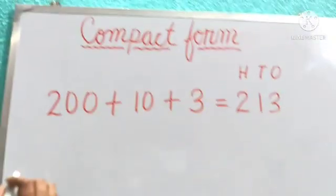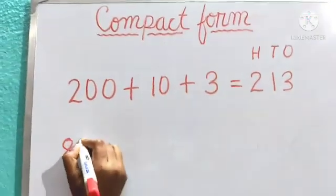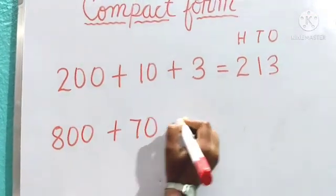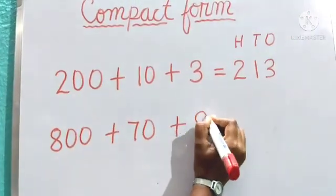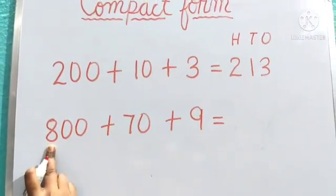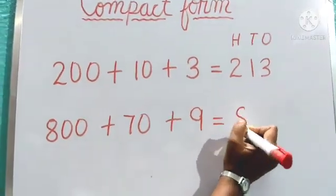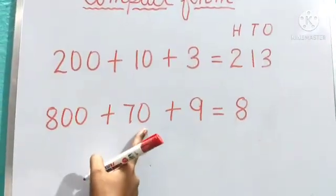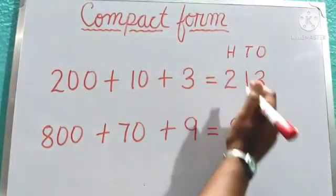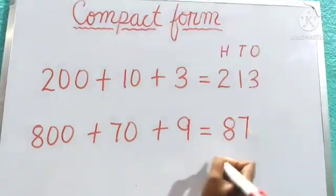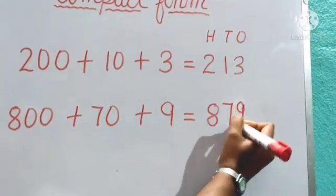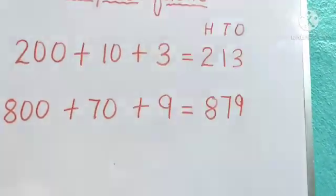Now let us see one more example: 800 plus 70 plus 9. 800 means 8 is in the hundreds place, so we write 8 there. 70 means 7 tens, so 7 is in the tens place. And 9 ones means 9 is in the ones place. So the number is 879.